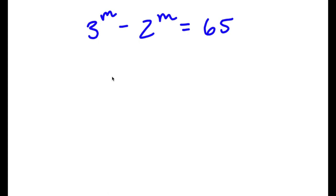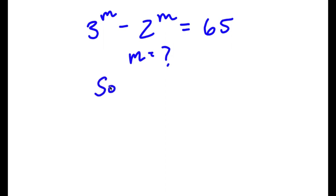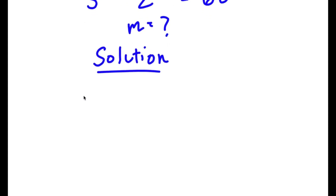Hey guys, welcome back to Clearing Academics. In today's video I'm going to be teaching you guys how to solve this exponential equation. We have 3 to the power of m minus 2 to the power of m is equal to 65, and we want to find the value of m. So now for our solution, we're going to start with our equation: 3 to the power of m minus 2 to the power of m is equal to 65.